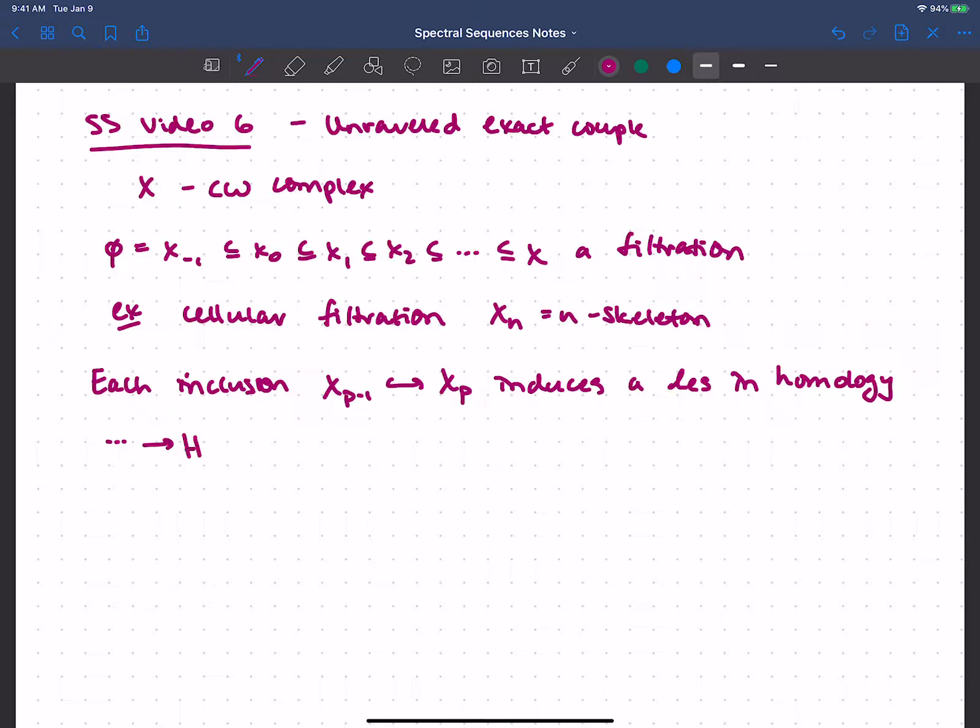So we get this long exact sequence, and it's going to go HN of XP minus 1 maps to HN of XP, maps to HN of XP comma XP minus 1, that relative homology, and down to HN minus 1 of XP minus 1, and so on, and continue of course forever, and that's our connecting homomorphism there.